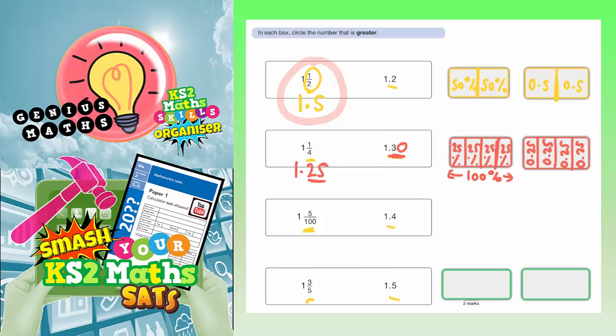Because 1.3 is the same as 1.30 or 1.30, if you like. You shouldn't really say 1.30, but if it helps you compare that to 1.25, then you can say it if you want to. So between 1.25 and 1.30, 1.30 is obviously bigger. If you think about money, this would be £1.30, whereas this one would be £1.25. So £1.30 would be bigger, therefore 1.30 is bigger. So that's the one that we need to circle there.